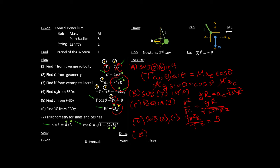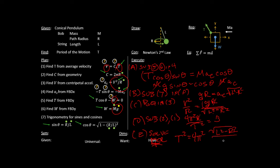Now I just have to solve for T. I really only care about T squared — adding another square root sign isn't going to improve anything. So T squared equals 4π² times R, but this R and that R cancel, giving us T squared equals 4π² times the square root of L squared minus R squared divided by g.